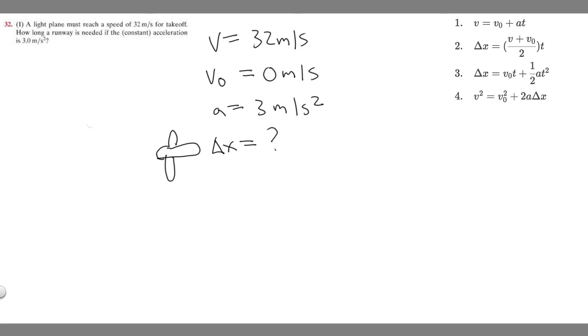If we look at all of these, the first three we see that all of these require time to solve, and we're not given time, so we're not going to use any of the ones that require time. So the only one that we can use is this one, and we can see that all of our variables line up. We have all the variables to solve for delta x. So let's go ahead and do it.